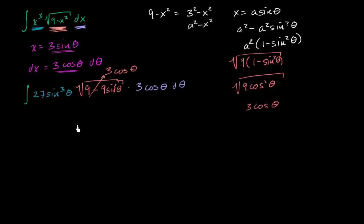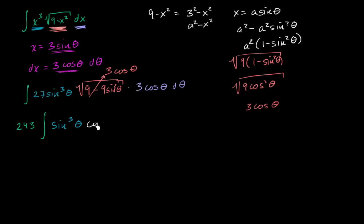So what does this simplify to? We have 27 times 3 times 3, which is 243. This gives us 243 times the integral of sine cubed theta times cosine squared theta dθ.